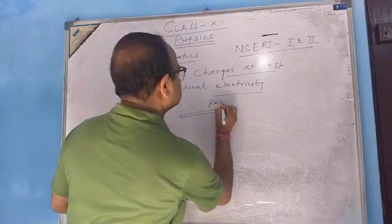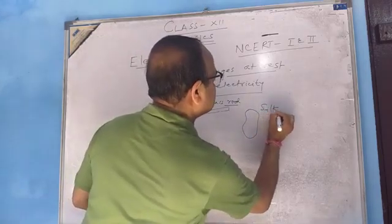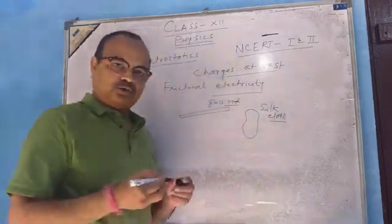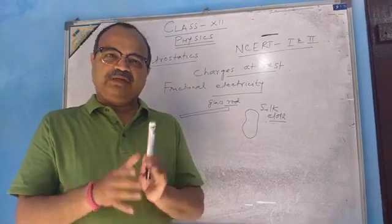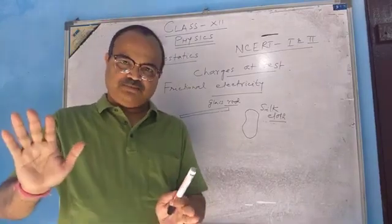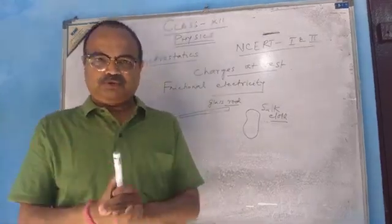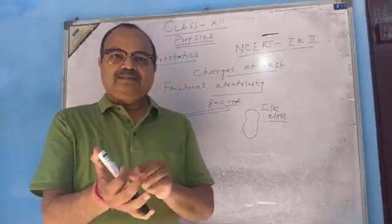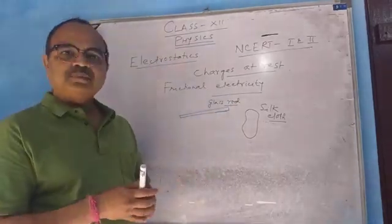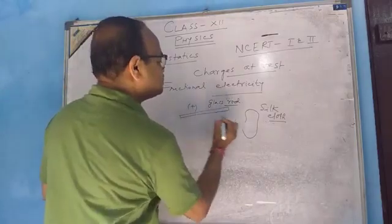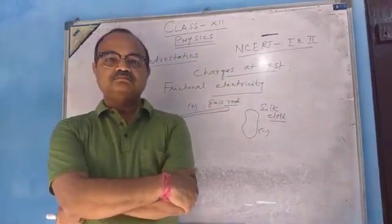Similarly, if a glass rod is rubbed with silk cloth — I suggest you note down the things I am giving, as this will give you complete notes — it is observed that the glass rod becomes positively charged and the silk cloth becomes negatively charged.